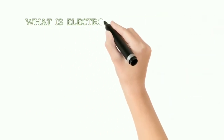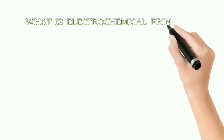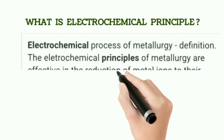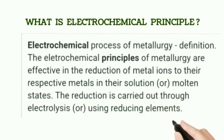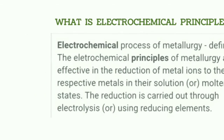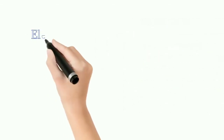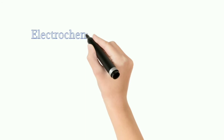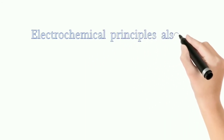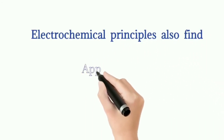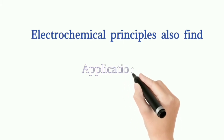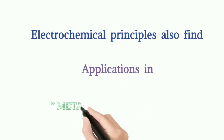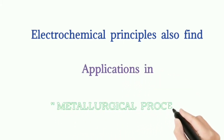Before entering into the topic, we should know what is the electrochemical principle. The electrochemical principle of metallurgy is effective in the reduction of metals to their respective metals in their solutions or molten state. Usually the reduction is carried out by electrolysis process. This electrochemical principle also finds some applications in metallurgical processes.